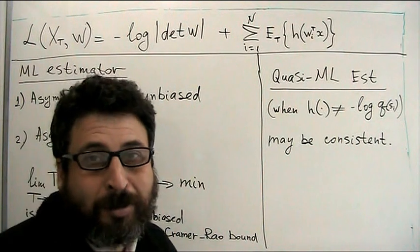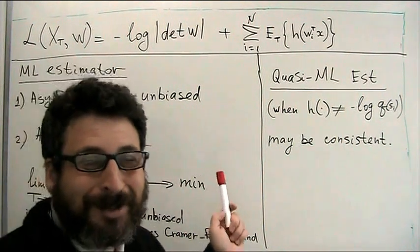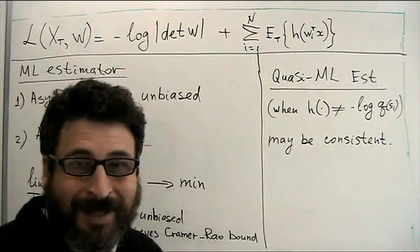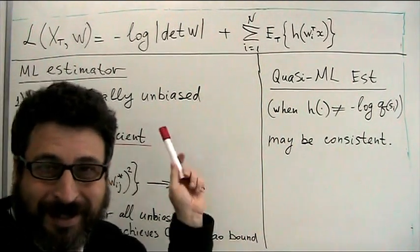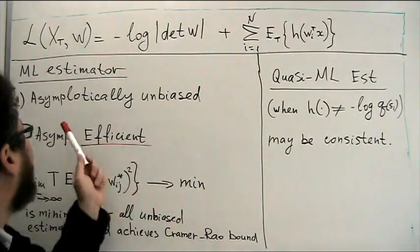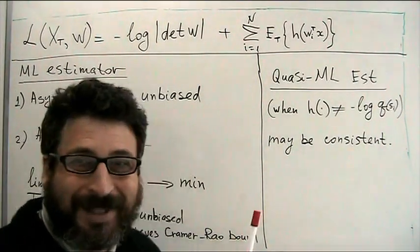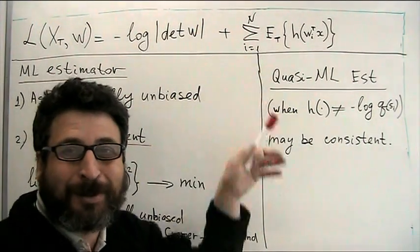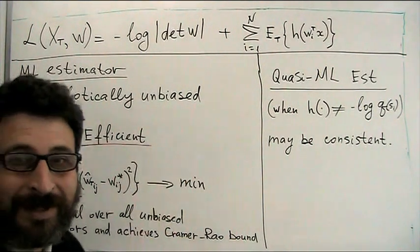Now, few words. Why are we interested in maximum likelihood estimates of w? Maximum likelihood estimator has some nice properties. It's asymptotical properties, I would say, when t sample size goes to infinity. So, it's asymptotically unbiased.